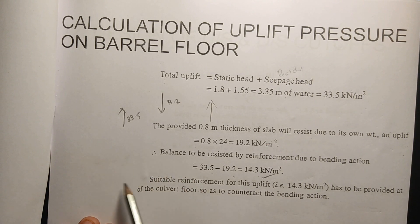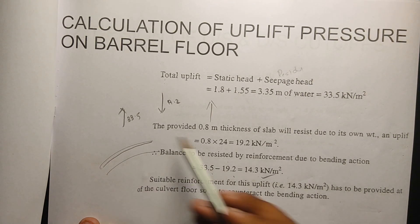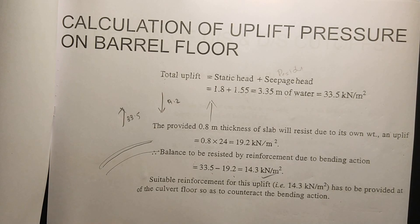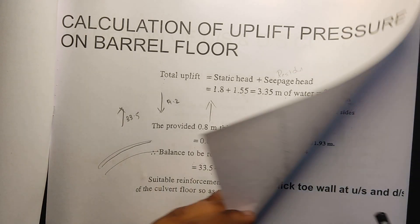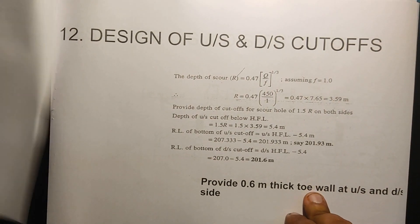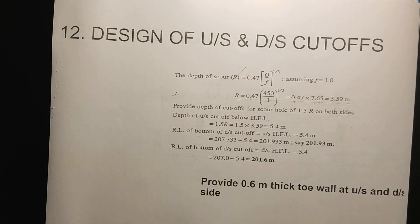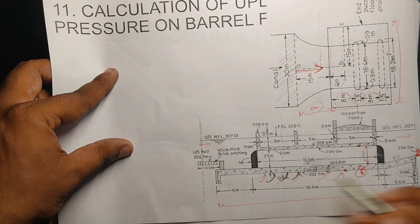Now there is a new step: to use suitable reinforcement. We have to come up with reinforcements. This is the main step — the design of upstream and downstream cutoff. These are the two cutoffs taken in the design.